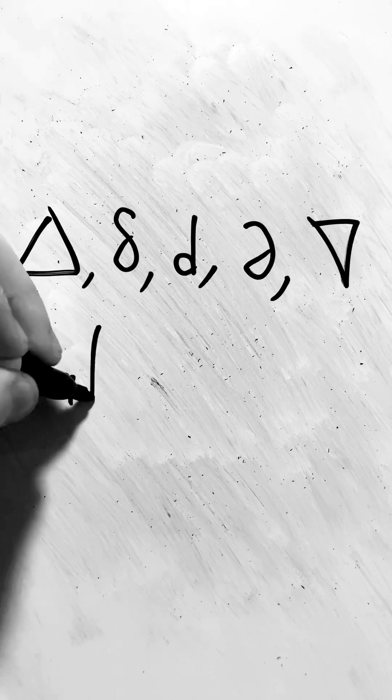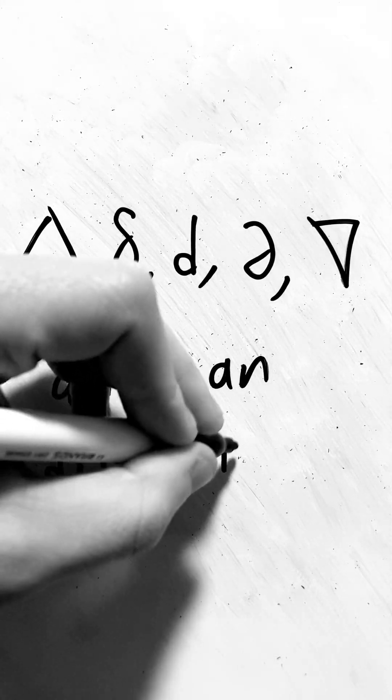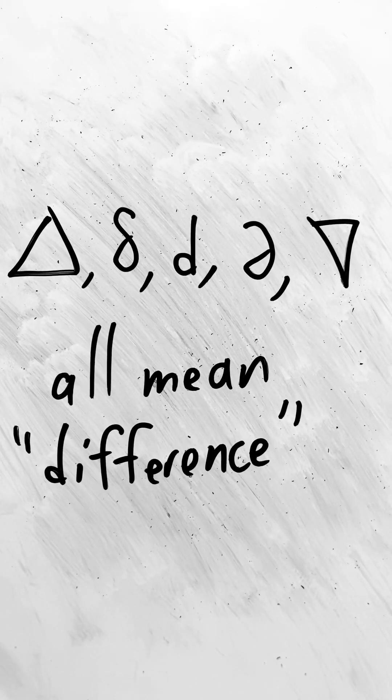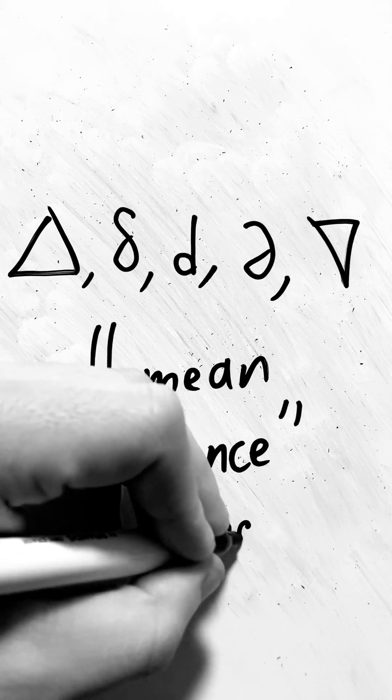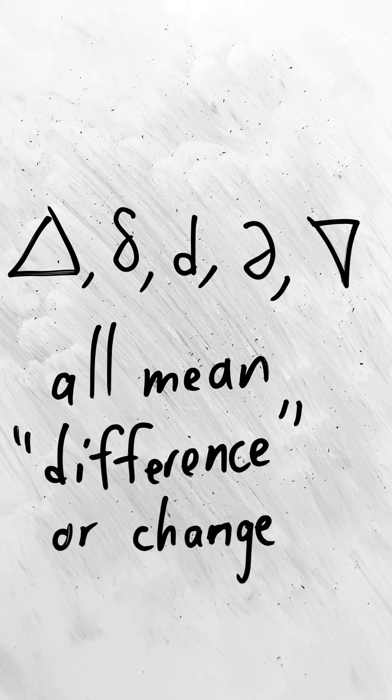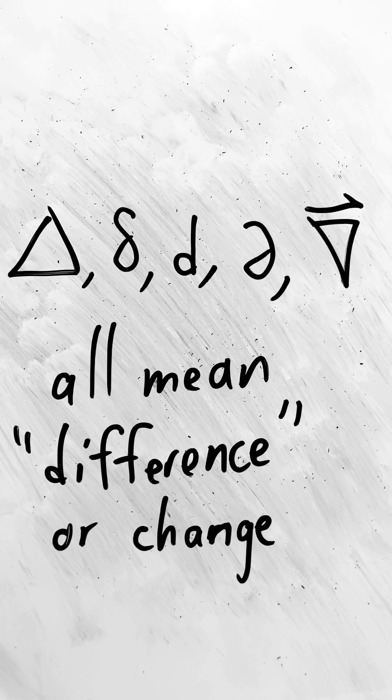Capital delta, lowercase delta, lowercase d, del, and nabla all mean a certain difference. This is the essence of differential calculus, and they all mean some sort of change, or in this case, a change in slope. And nabla should be a vector, but that's a story for another time.